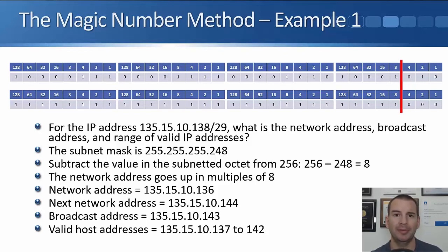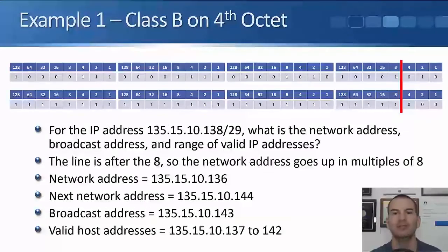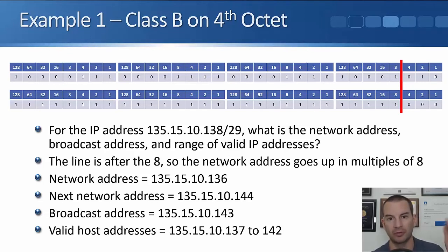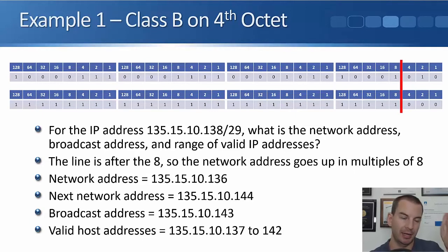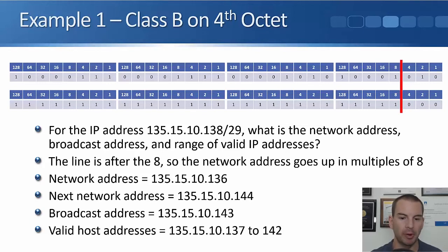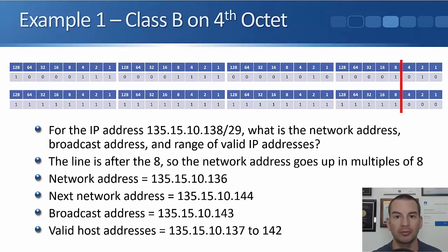With the magic number method: whatever the subnet mask is, you subtract that from 256, and that gives you your address blocks. It's pretty similar to the way I was doing it previously — I write out the bit values for the octet being subnetted (128, 64, 32, 16, and so on), figure out the bit pattern, put the line in, and see where the address block is. Play around with these different methods, find which one you're most comfortable with, and use that one in practice and on exam day.